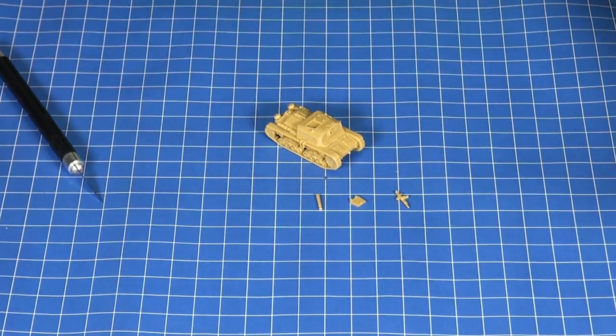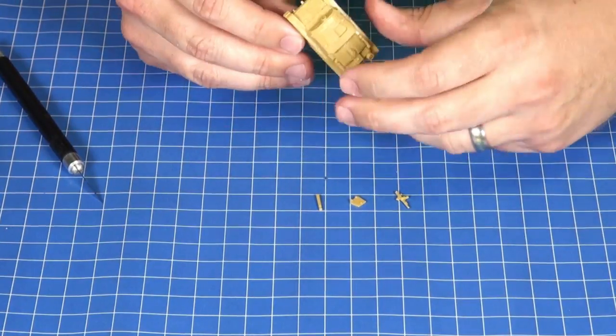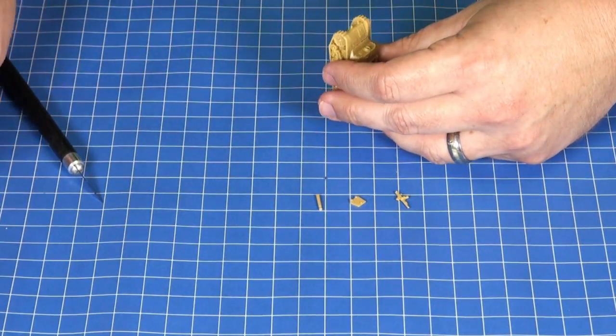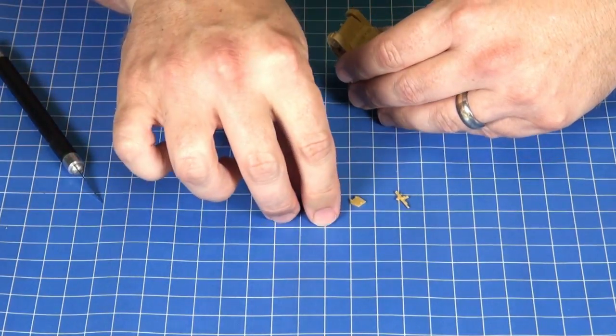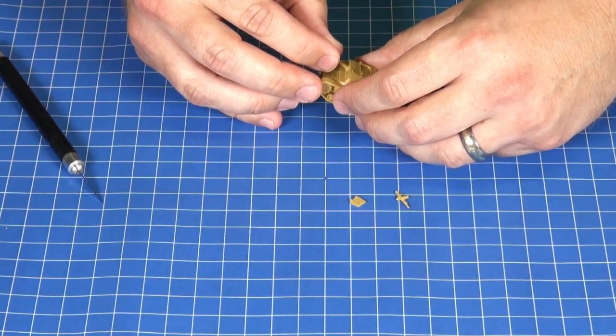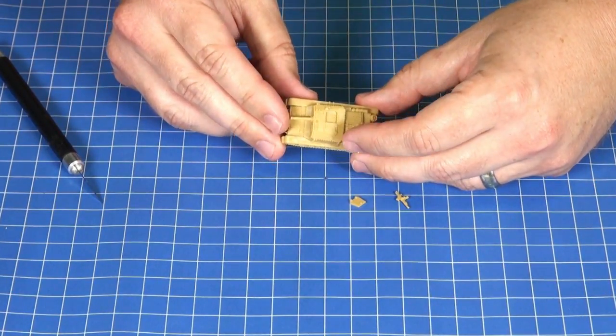Alright, with that on we've only got three pieces left to go. We've got the gun, the hatch, and the machine gun. So just put a drop of glue there inside the mantlet, attach the gun. Make sure the pepper pot looking end is pointing towards the enemy.